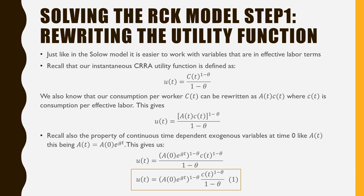Recall the property of continuous time-dependent exogenous variables: A(t) = A(0) · e^(gt). Substituting this in, we get equation 1: u(t) = [A(0) · e^(gt)]^(1−θ) · c̃_t^(1−θ) / (1−θ).